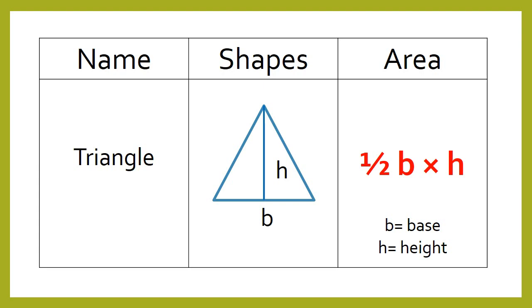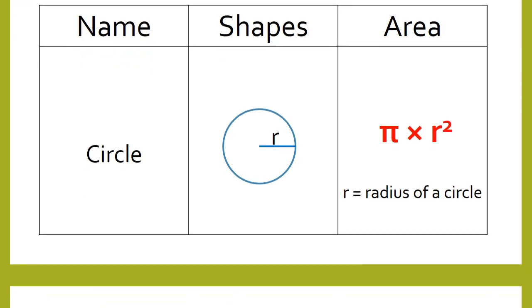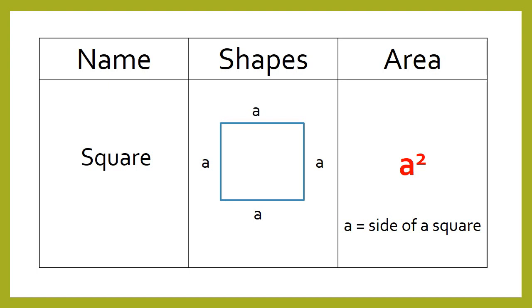Welcome to Tutoring Planet. Our today's topic is different geometrical shapes and their formulas. Triangle: area of a triangle is 1/2 × base × height. Area of a circle: π r². Area of a square: